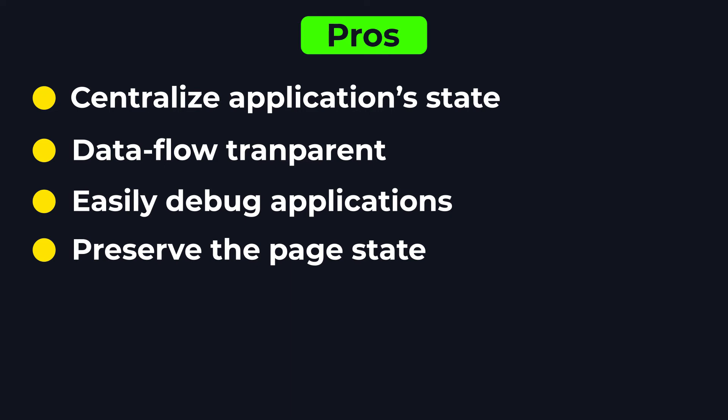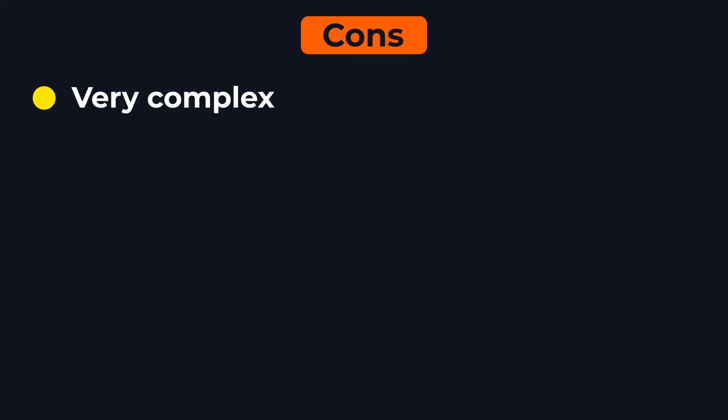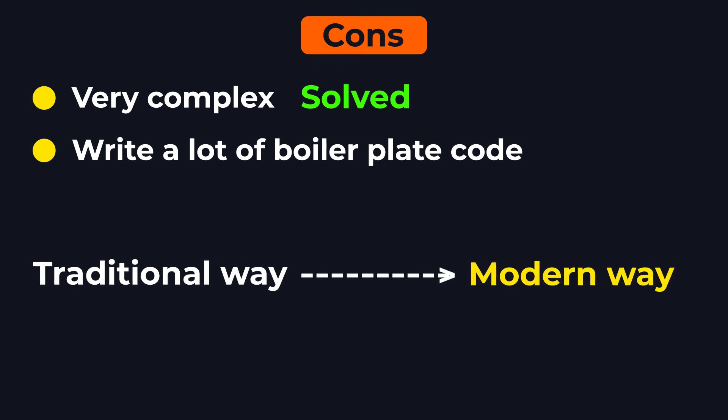We will see all of these later in this course. Now all advantages come with disadvantages. The first one is that a lot of developers find Redux very complex, but that is not true. I think they find it complex because Redux is based on some functional programming concepts — don't worry about that, we will cover those concepts soon. Another disadvantage is that for Redux, we have to write a lot of boilerplate code. In this course, I will first show you the traditional way to write Redux code, and after that we will write code in the modern way, so you don't need to write a lot of boilerplate.